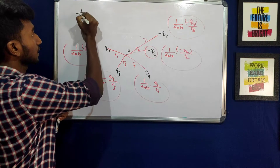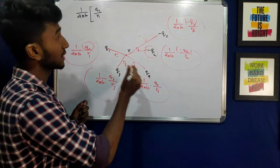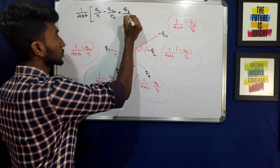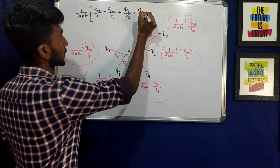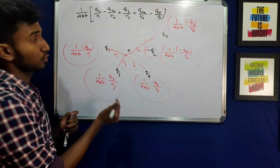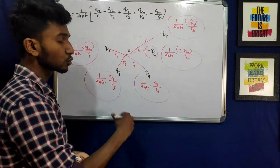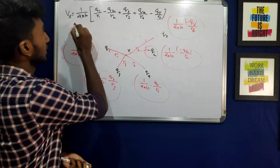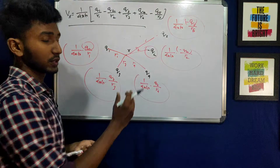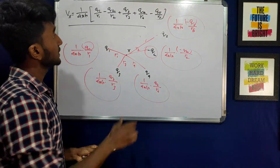The first step is: 1 by 4 pi epsilon naught, common factor. Then: q1 by r1, minus q2 by r2, minus q3 by r3 — q3 is positive — plus q4 by r4. And q5 is negative, so minus q5 by r5. This gives us V_x, the total electric potential at point X.